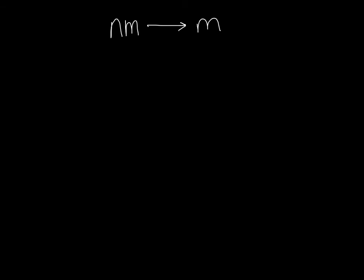First, I need to show you how to convert between nanometers and meters. A nanometer is extremely tiny, which is why most of the time when you look at wavelengths they're given to you in nanometers. But because the speed of light is in meters per second, we always have to convert those into meters. To make that conversion, take whatever nanometers you are given and multiply by 10 to the negative 9th.